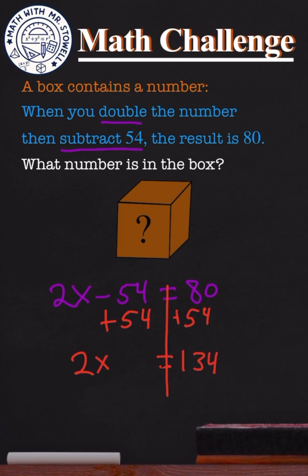All we have to do now is solve for the value of x by doing the opposite of multiplication, and that would be division, so we divide both sides by 2. This is x equals 67.